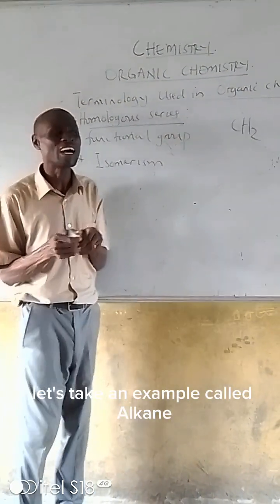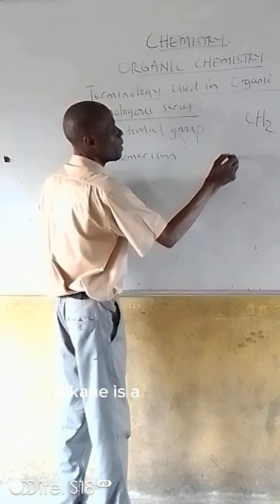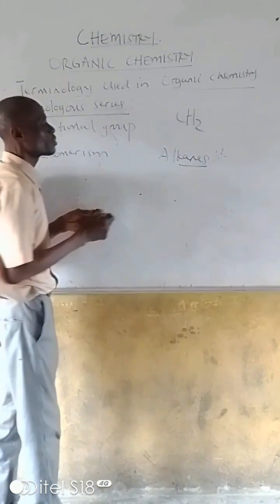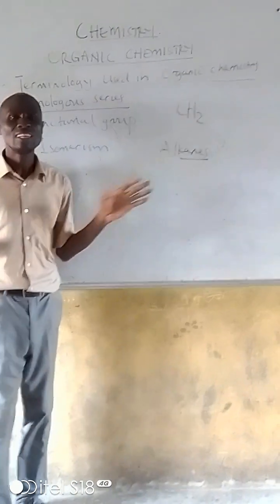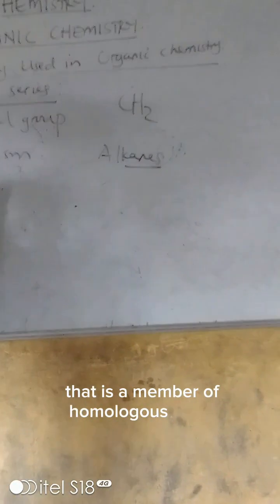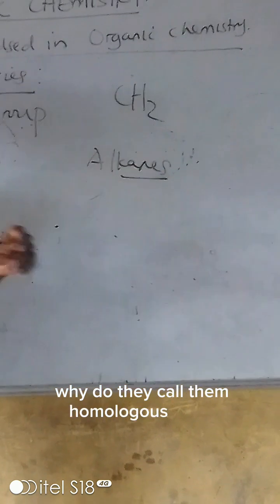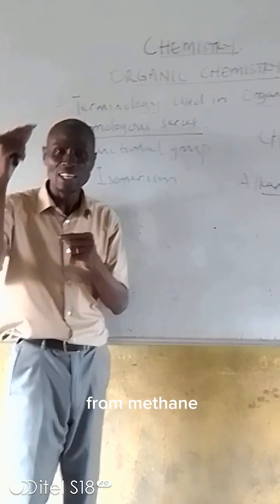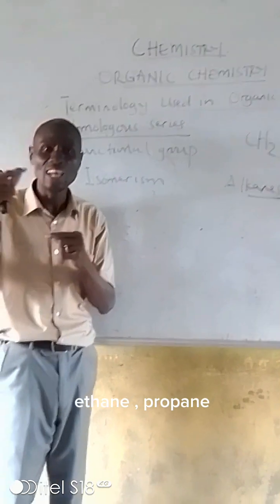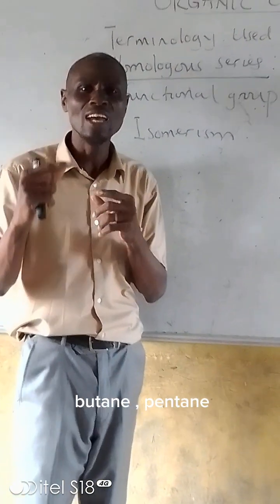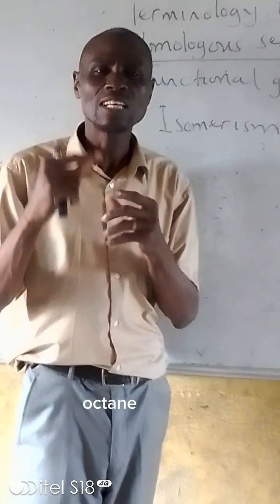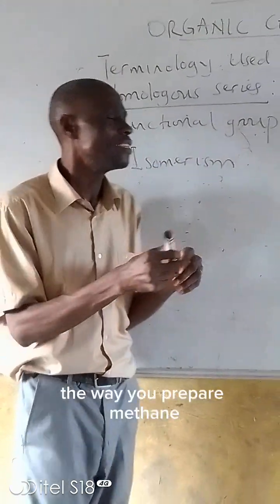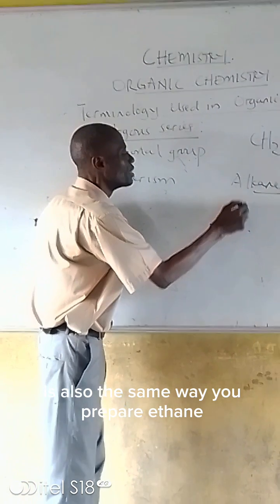Let's take an example called alkanes. Alkanes are members of a homologous series — they are hydrocarbons that are members of the same homologous series. From each one of the members — methane, ethane, propane, butane, pentane, octane and the rest — they have the same method of preparation. The way you prepare methane is also the same way you prepare ethane, likewise for propane.